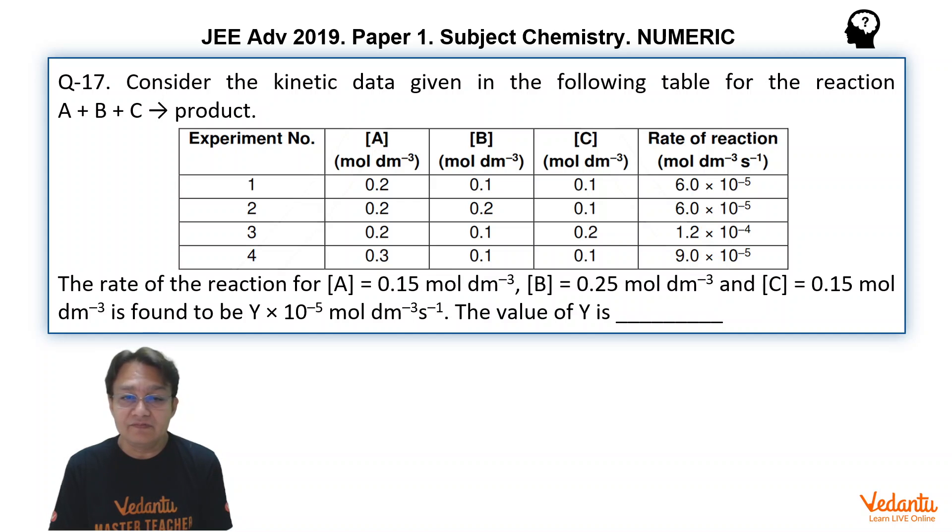Similarly, if we see the third data, which is A is 0.2, B is 0.1, C is 0.2, and we compare it to experiment 1, we can find that the concentration of C has been doubled.